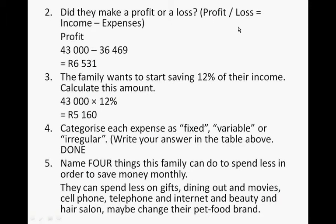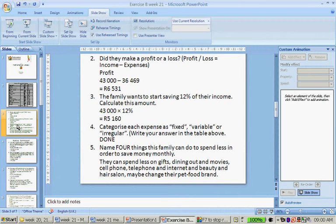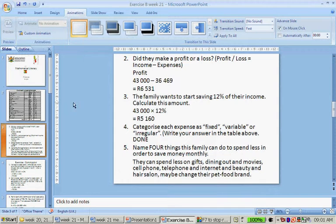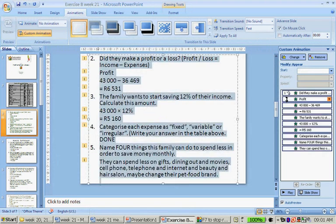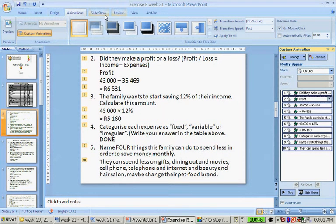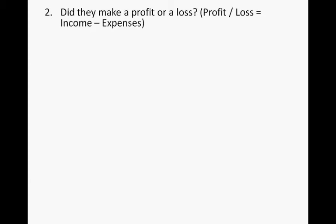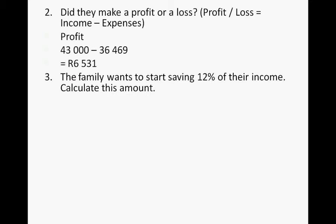Did they make a profit or a loss? A profit or a loss is income minus expenses. They made a profit because they got 43,000 Rand and the expenses were 36,469 Rand, giving a profit of 6,531 Rand.